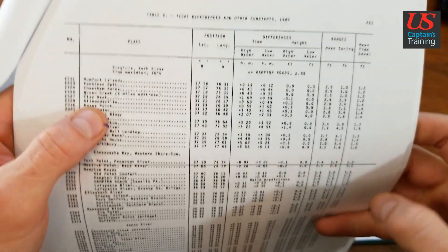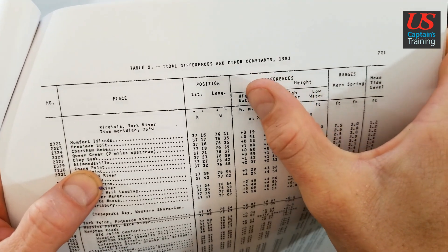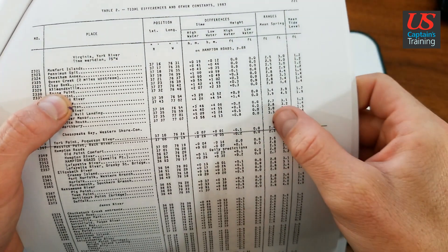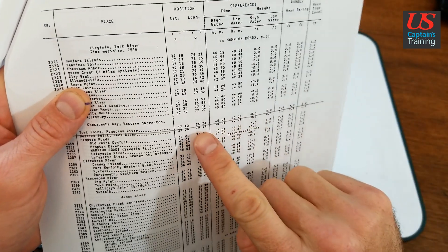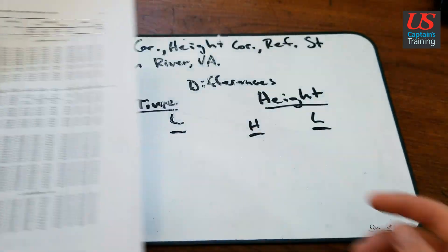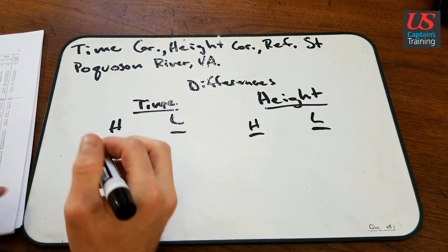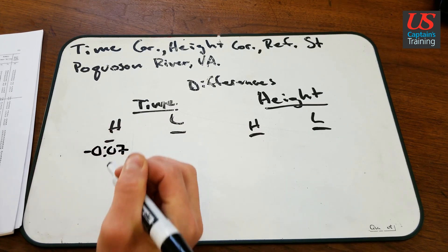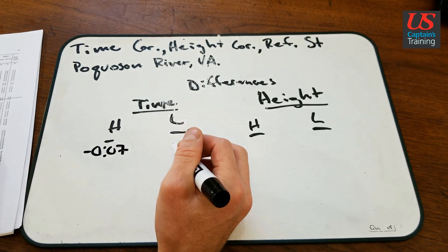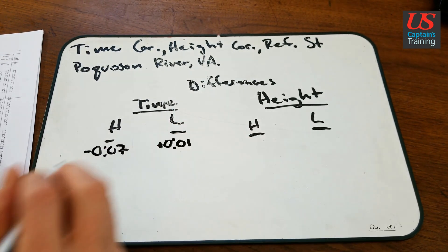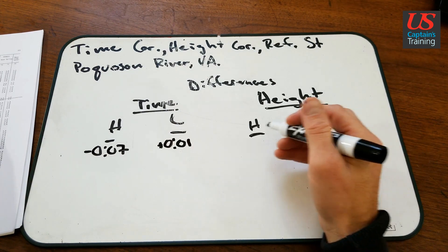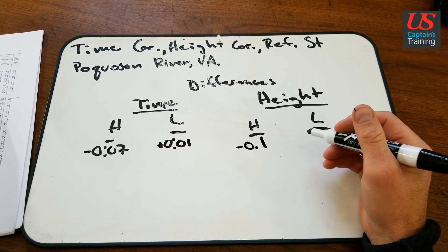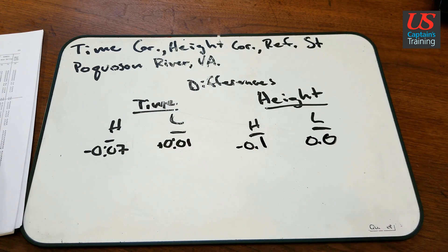Here is the column we are interested in — Differences: time high water, low water; differences height high water, low water. It is underlined. Let's record these differences. The time of the high water difference is minus 7 minutes. The time of the low water is plus 1 minute. The height difference for high water is minus 0.1 feet, and for low water, 0.0.